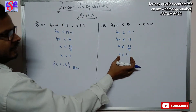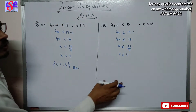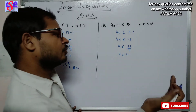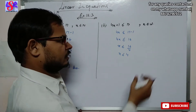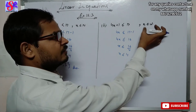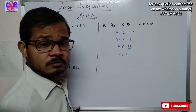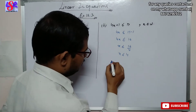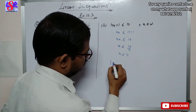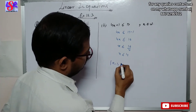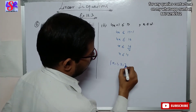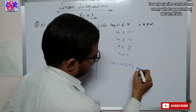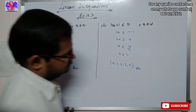So x will be less than or equal to 16 upon 4, that is x is less than or equal to 4. Since x is less than or equal to 4, the value 4 is included. Whole number begins from 0, so the answer is 0, 1, 2, 3 and 4.